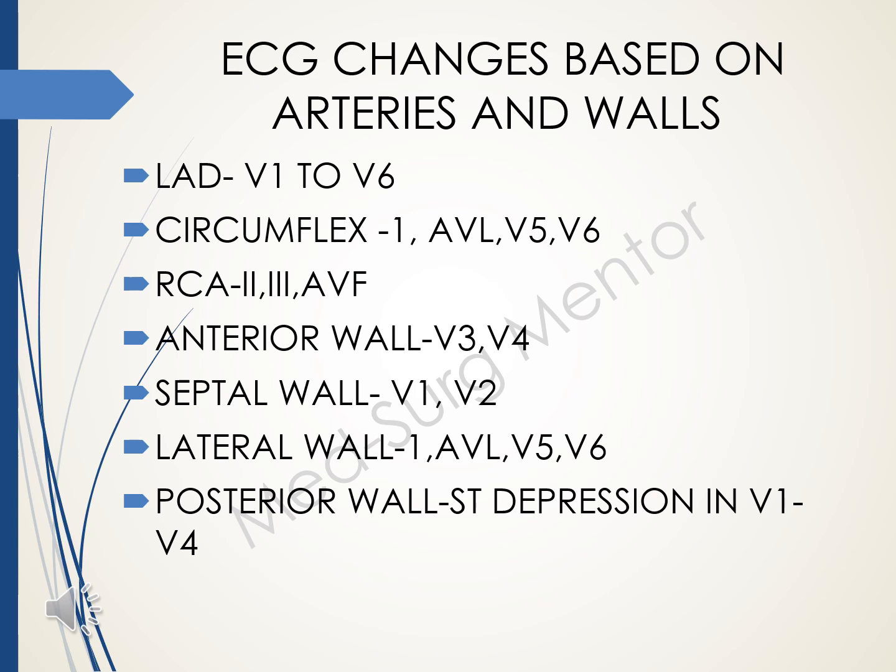ECG changes based on arteries and walls: Left anterior descending artery — V1 to V6. Circumflex — lead 1, AVL, V5 and V6. Right coronary artery — leads 2, 3 and AVF. Anterior wall — V3, V4. Septal wall — V1 and V2. Lateral wall — lead 1, AVL, V5 and V6. Posterior wall — ST depression in V1 to V4.